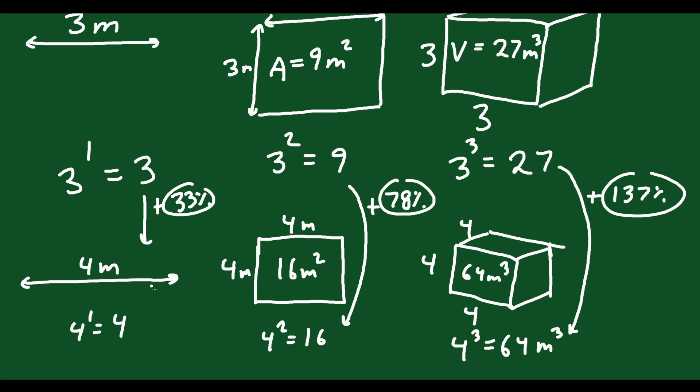So measuring in one dimension, if you notice a change like 33 percent from 3 to 4, doesn't necessarily mean that that same change is going to take place when we talk about the surface area of the shape or the area of the shape or the volume of the shape. Those can be and they often are much quicker in the way that they grow, much more drastic in the way that they grow compared to just the simple length.